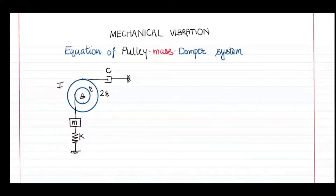Welcome to this session of mechanical vibration. In this class we are going to understand how to write the equation of motion of a pulley-mass system when a damper is also present in the system. Traditionally we have problems where a pulley-mass is connected with a spring, but in the current problem we have a damper connected with the larger pulley and we have to write the equation of motion.